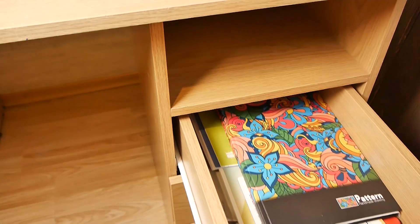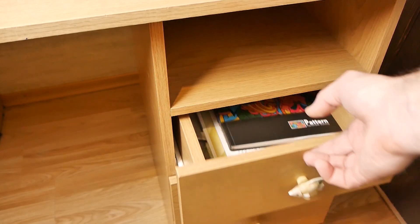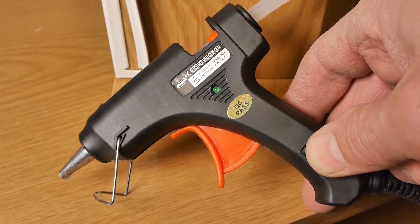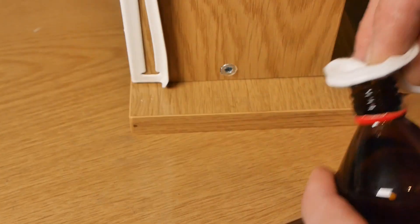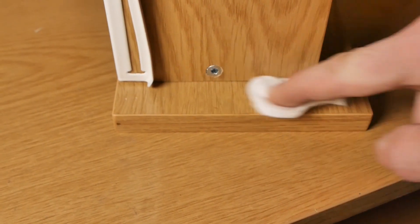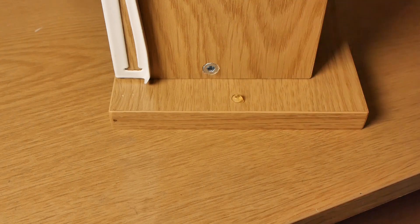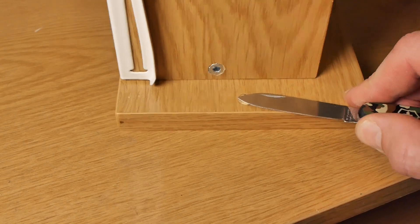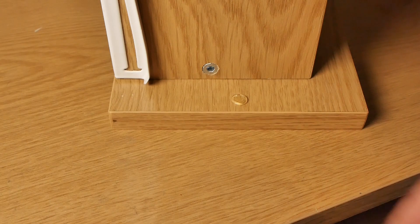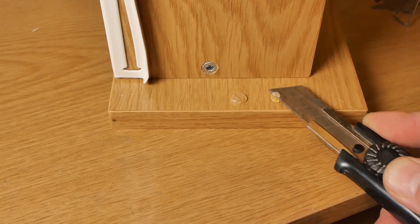But if there are no dampers on the furniture, then there is an alternative in the form of hot melt adhesive. We degrease the surface of the box and apply a drop of hot glue. Then you can gently press it with a knife, or wait for it to solidify, and cut it to the desired thickness.